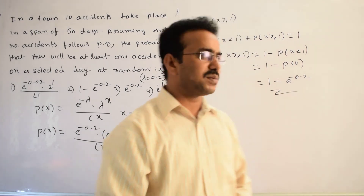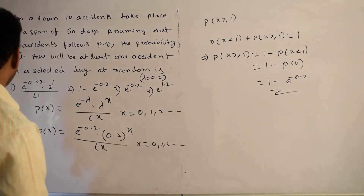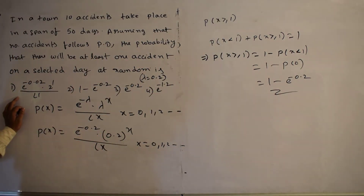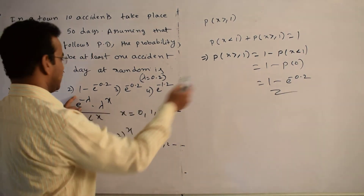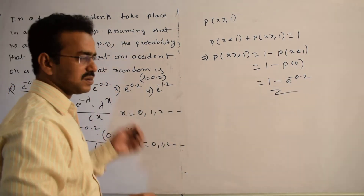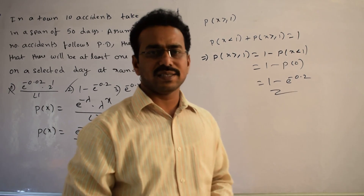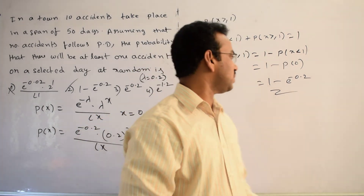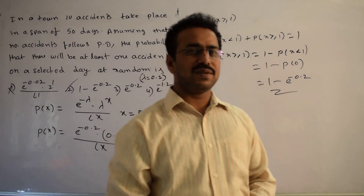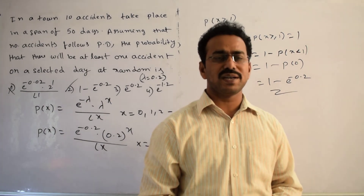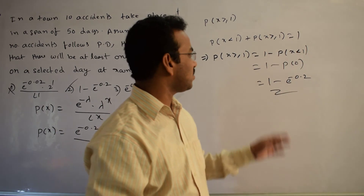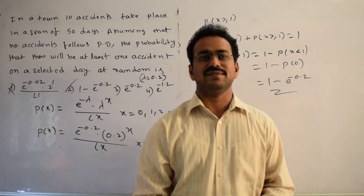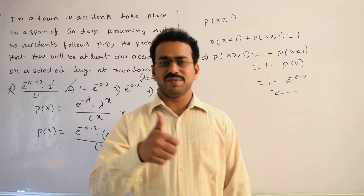Comparing with the given options: the first option, e^(−0.02) × 2, is incorrect. The second option, 1 − e^(−0.2), is the correct answer; the rest are incorrect. The key logic used here is the complement rule: P(X ≥ 1) = 1 − P(X < 1). Thanks for watching. All the best.